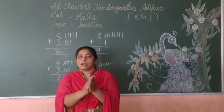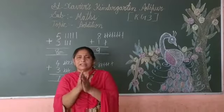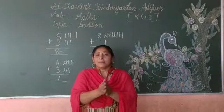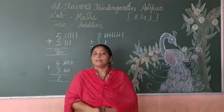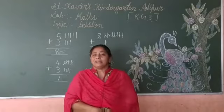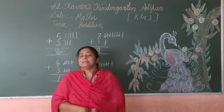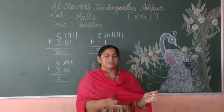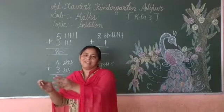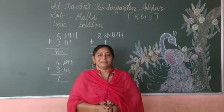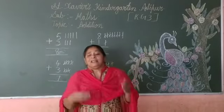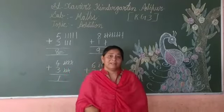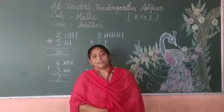Jo bhi aapki paas hoga — bohut sare chocolates diye honge kisine bhi aapko, ya bohut sare gifts diye honge. Suppose aapki birthday mein bohut sare gifts milte hain, toh aap count karte na? Mamie bolenge ya pappa bolega ki bachcha, aap count karo kitne gifts mile hain aapko. Toh aap count karte: 1, 2, 3, 4, 5, 6, 7, 8, 9, 10. Yaane jitni bhi cheez hoti hai usko count karna hai — jyada karna hai, usko addition bolte hain.